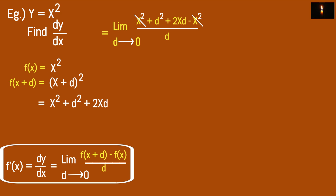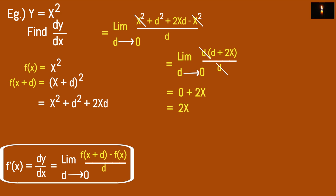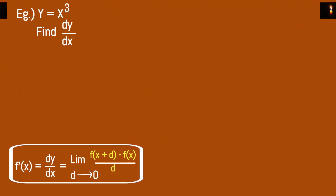We take the limit as d approaches 0. We cancel common factors — d divides out, leaving d plus 2x. By direct substitution with d equals 0: 0 plus 2x equals 2x. So the differential of x squared is 2x.